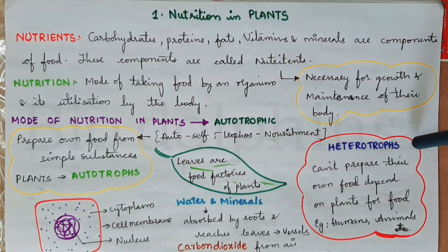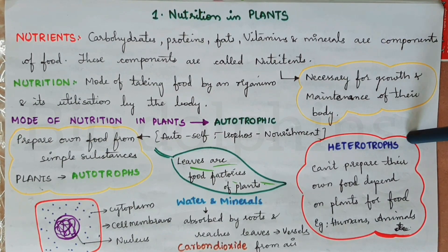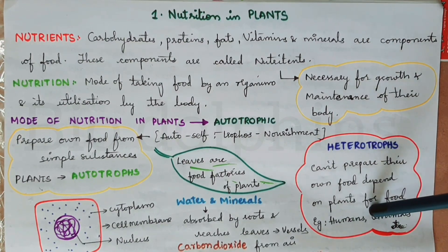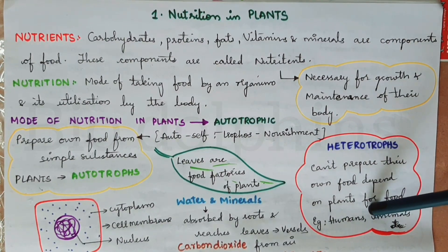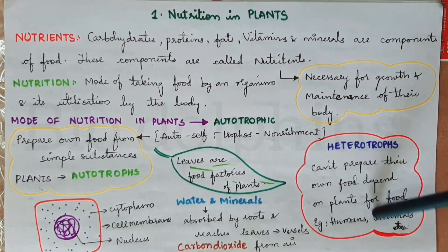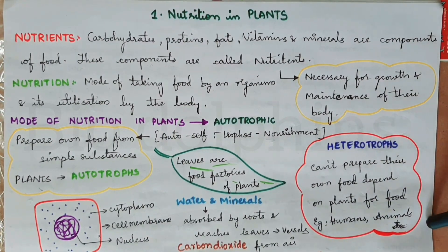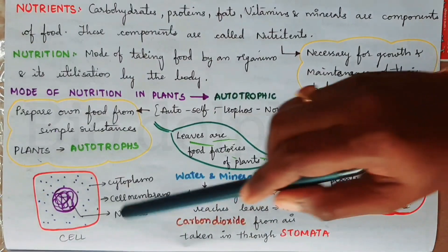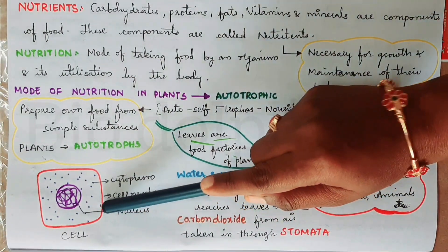Heterotrophic mode of nutrition: examples include human beings, cats, dogs, and other animals. These are called heterotrophs.